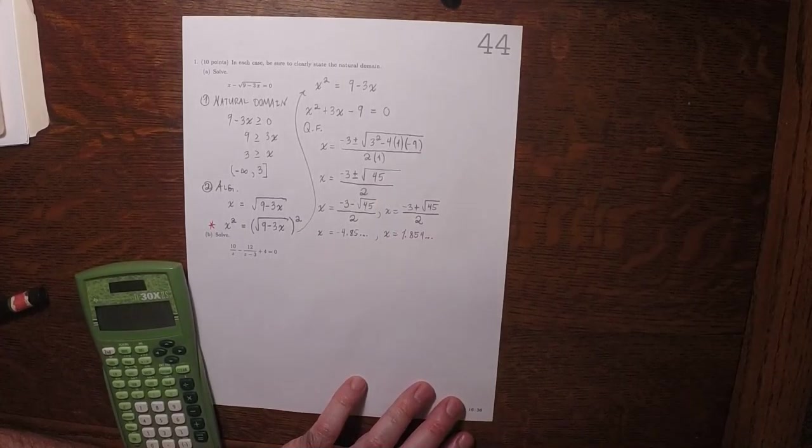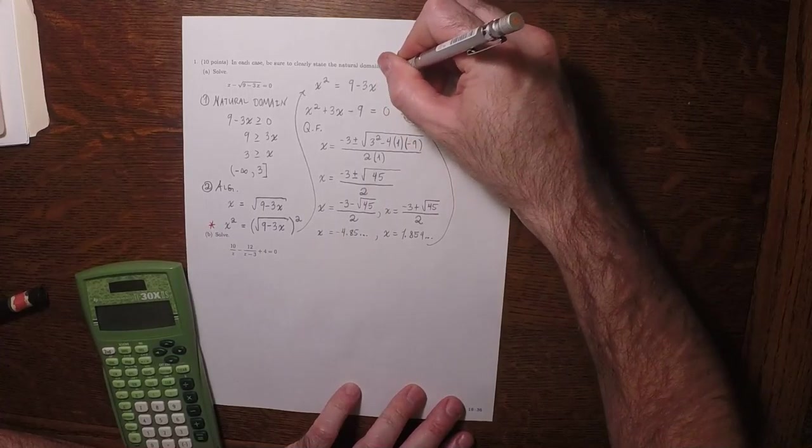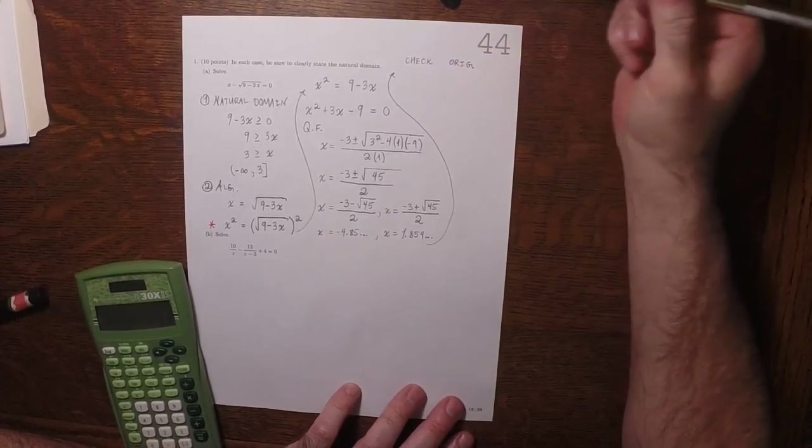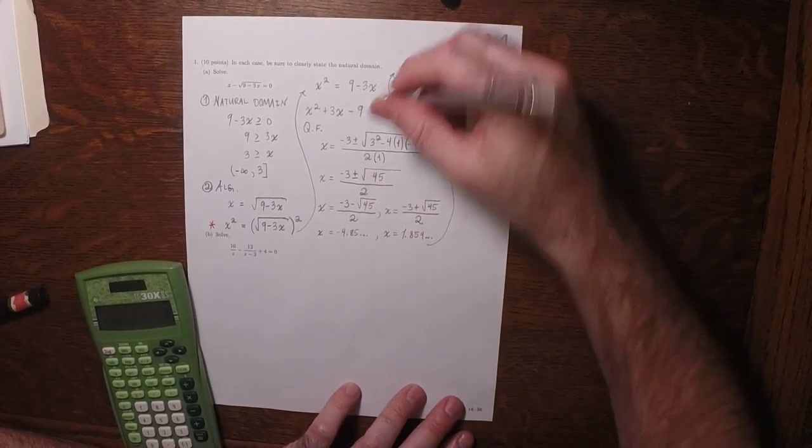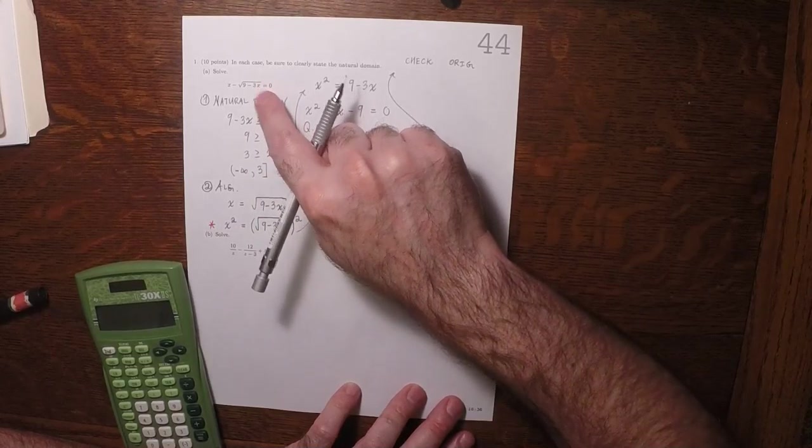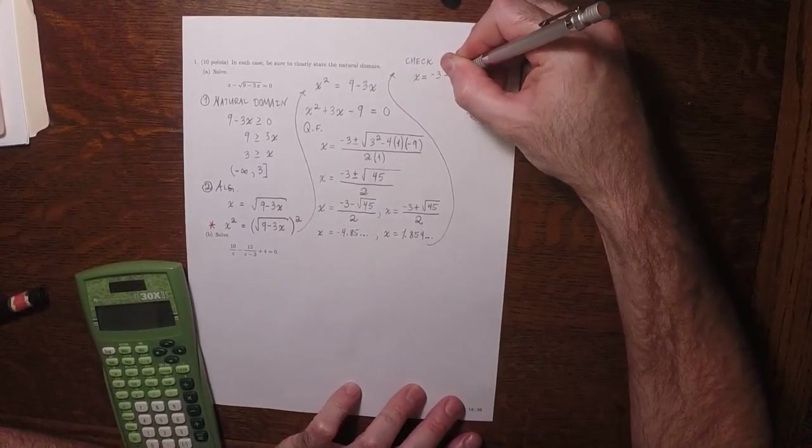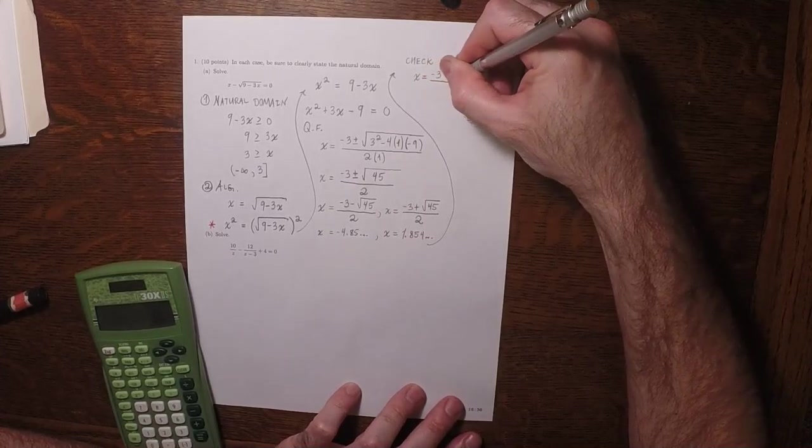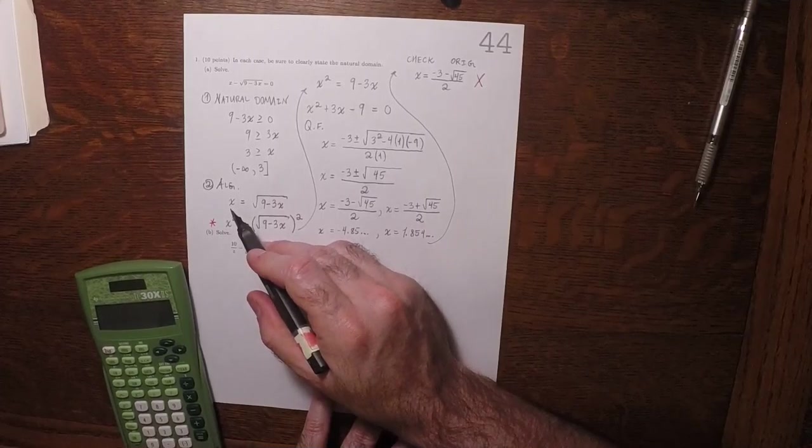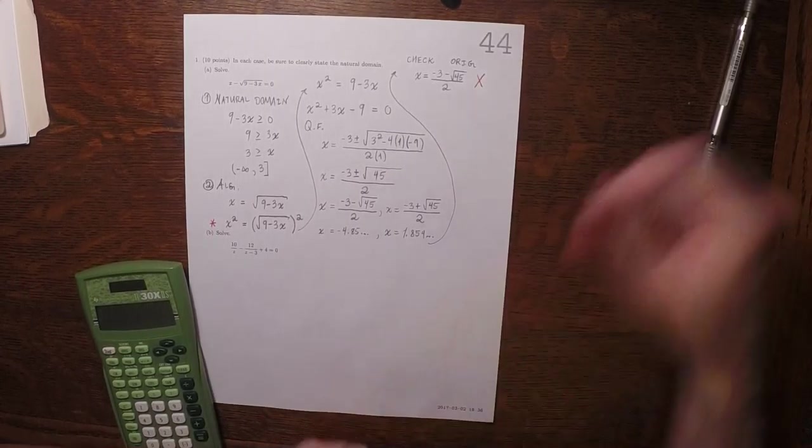Now, the next thing we need to do is check and see if they satisfy the original equation. Well, this equation right here, x is square root of x equal square root of 9 minus 3x. That's the same as the original because that's just moving the radical to the other side. The negative answer does not satisfy the equation, because there's no way that a negative value could be equal to something that comes out of the radical. So there's no way that could work.